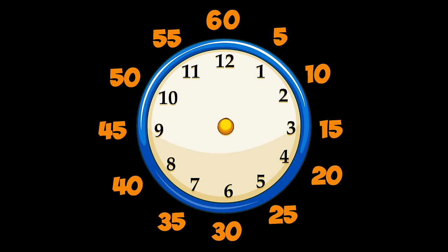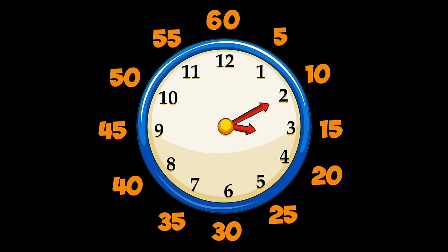If we want to show 3:15, we start with three o'clock and then count by fives until we get to 15: 5, 10, 15. Notice how each number on the clock stands for one group of five minutes.